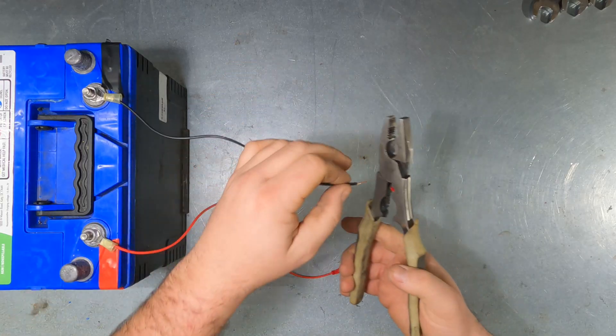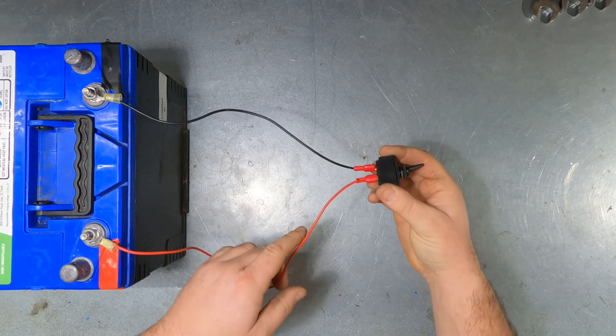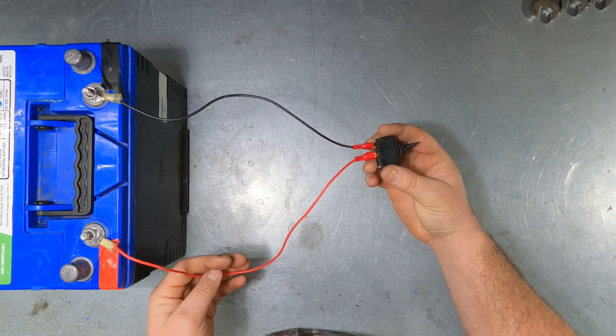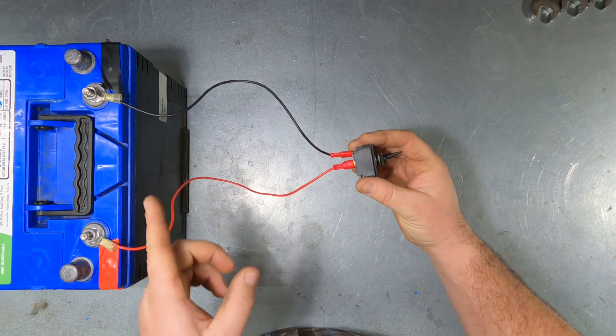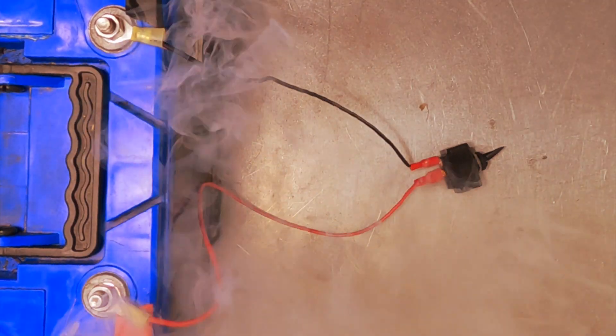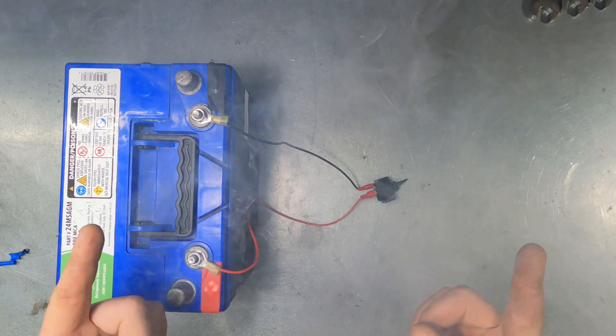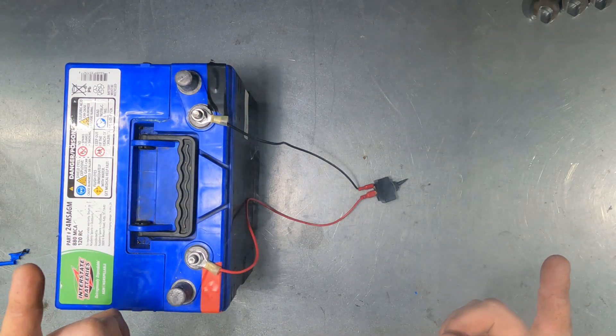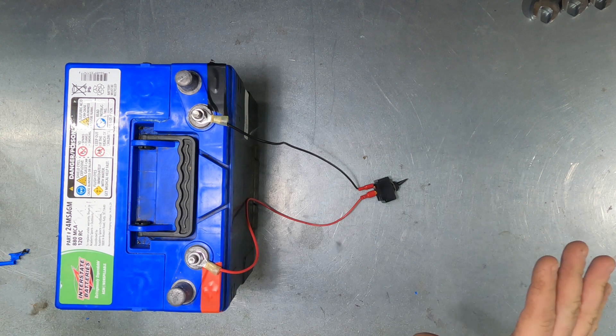So I'm going to show you what happens when you do not have a fuse. I'm demonstrating a short to ground. Whenever I flip this switch, it's going to connect positive and negative on this battery. Now let's see what happens. That is why you want to insulate your wires and you want to always use proper connections and fuses.